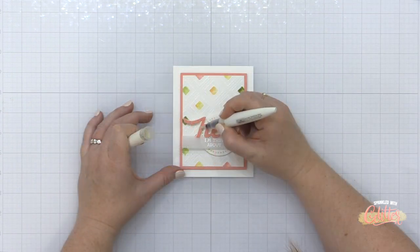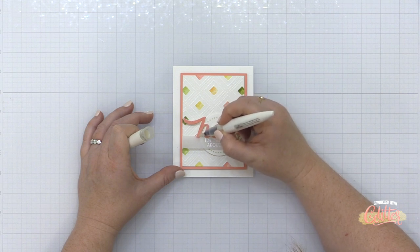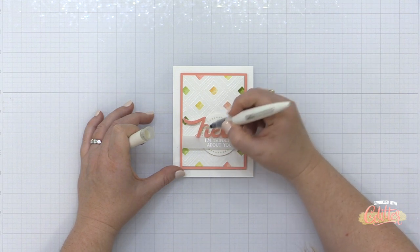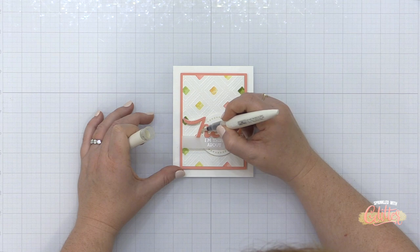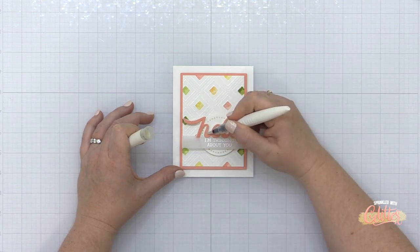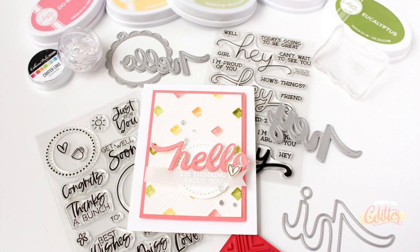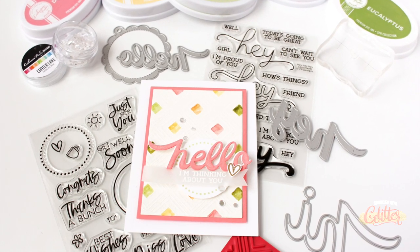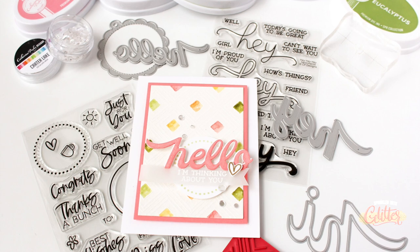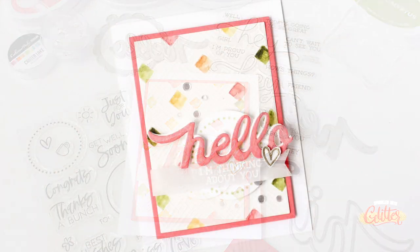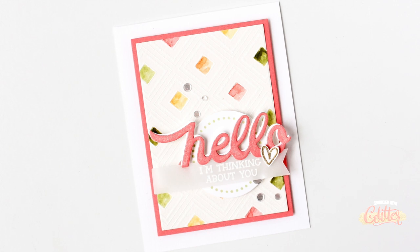Now to finish this card off I'm going to add a little bit of sparkle and shine and I'm starting with my tonic aqua shimmer pen here and just adding a layer of shimmer over that die cut sentiment. And then I added some crater lake sequins from Katherine Pooler just for a little more sparkle and shine because you know me I need the sparkle.